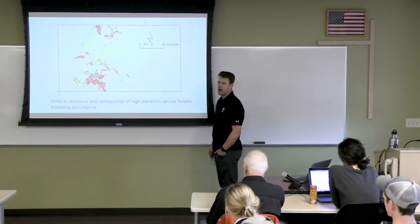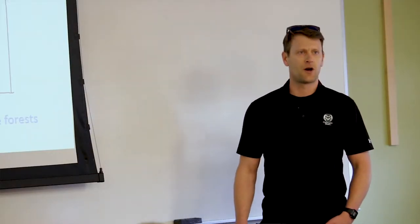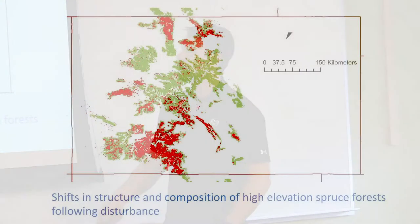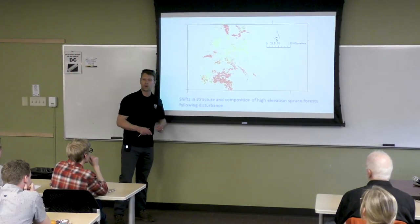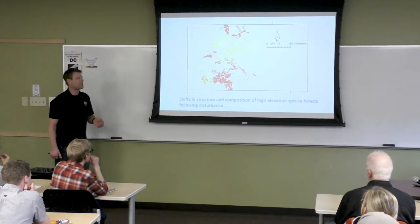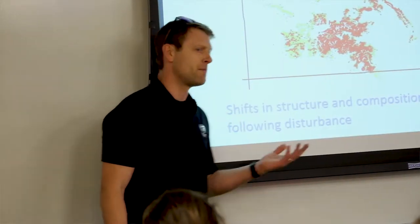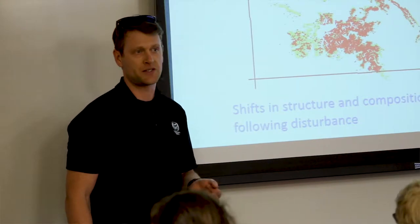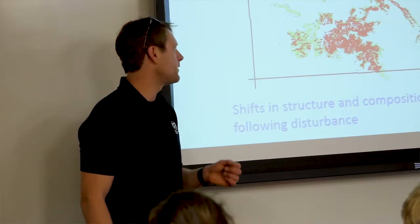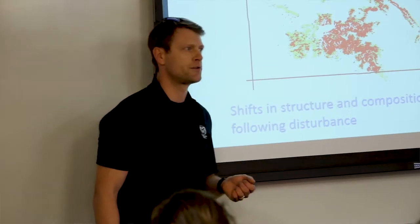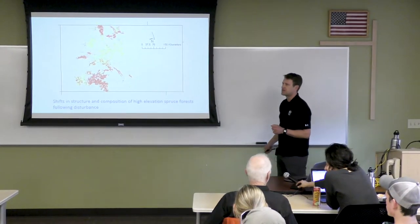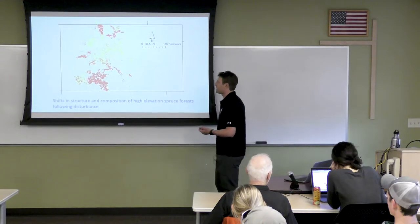This is a map of spruce beetle disturbance in Colorado over the last 15 years. The light green shows the range of Engelmann spruce in the state. The red polygons are aerial survey data showing areas of significant tree mortality. Quite a bit of Colorado's spruce forest has been significantly affected by spruce beetle. Based on my analyses, I estimate at least five million trees have been killed in the last ten years or so, and these disturbances have pretty significant effects on the structure, function, and composition of high-elevation spruce forests.